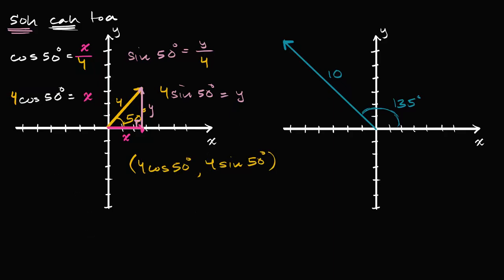You might notice something interesting: I have cosine of the angle with the positive x-axis for the x-coordinate, and sine for the y-coordinate, multiplied by the magnitude of the vector. In the unit circle definition of trig functions, cosine is the x-coordinate and sine is the y-coordinate where you intersect the unit circle. Our vector has a magnitude of four — it's four times bigger than a unit vector — so each component is four times bigger. That's why we multiply cosine of 50 by four for the x-component, and sine of 50 by four for the y-component.